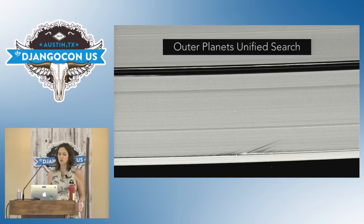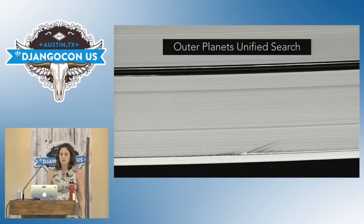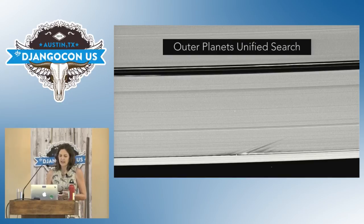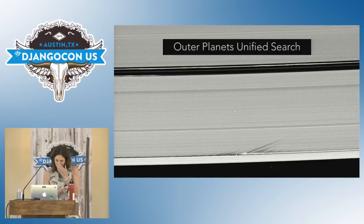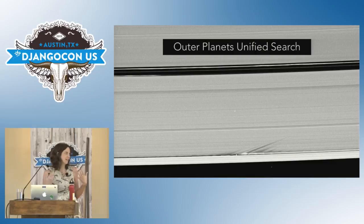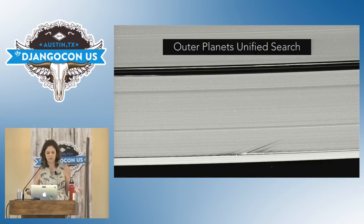So we built OPUS. In fine NASA tradition, we gave it an acronym. OPUS stands for Outer Planets Unified Search. The idea is that we've brought several missions into one single interface — we've unified them.